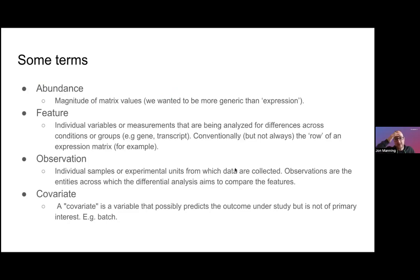Before I kick off, I just wanted to clarify some terms. By abundance here we're talking about the magnitude of matrix values. I'm aware that abundance is a bit overloaded in some communities, but here it's just a term we wanted to use to be more generic than expression. When I talk about features, I'm talking about the individual variables and measurements of the matrix, which in the expression space is talking about genes or transcripts.